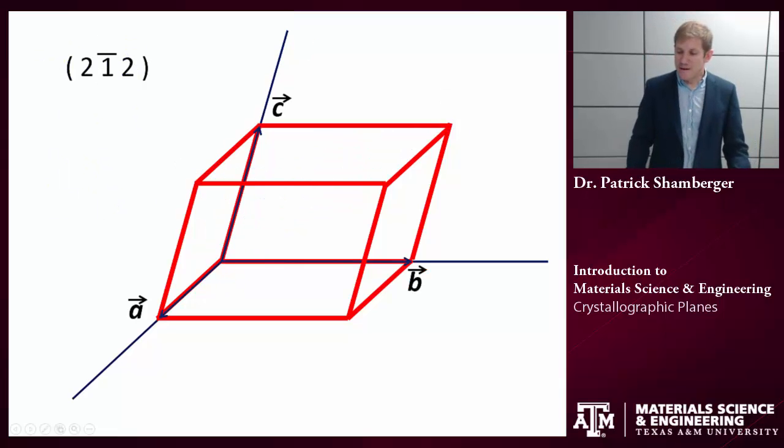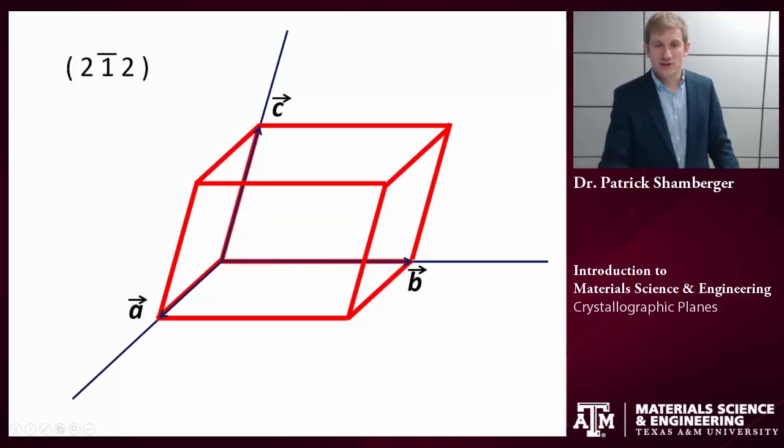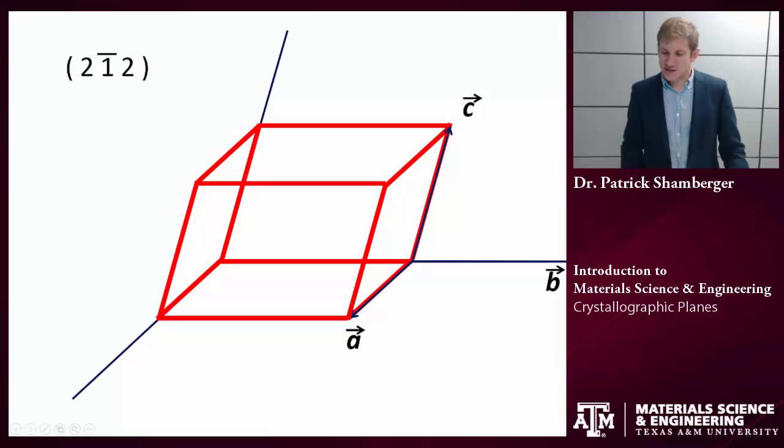Okay, the next kind of a challenge would be if you were given the indices and asked to draw a plane. So here we're given hkl of (2 -1 2). Now, because this is a negative number, I know one of two things are going to happen. Either I'm going to be intercepting somewhere out of the unit cell, off in the negative direction. Well, that is going to happen. So the alternative would be to redefine, to shift our axis off to the side. You don't have to do this. You can just extend your unit cell outwards. I find this to be easier sometimes.